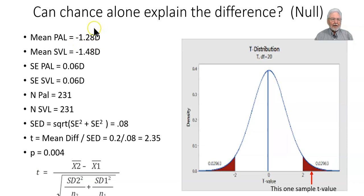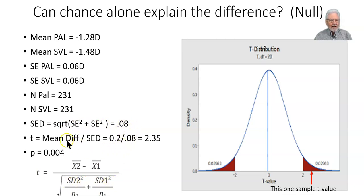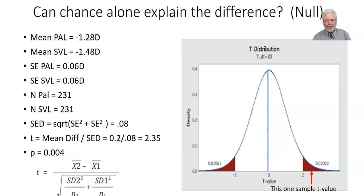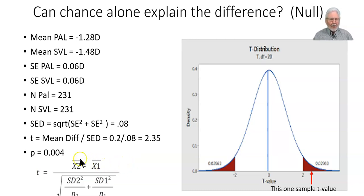In the COMET study, the progressive addition lens group had a mean progression of minus 1.28 diopters and the single vision lens group had minus 1.48, a difference of 0.2 diopters. Standard errors were 0.06, with 231 in each group. The standard error of the difference was 0.08, giving a t of 2.35 and a p-value of 0.004. Everyone gets excited about a significant p-value, but what does p actually mean?